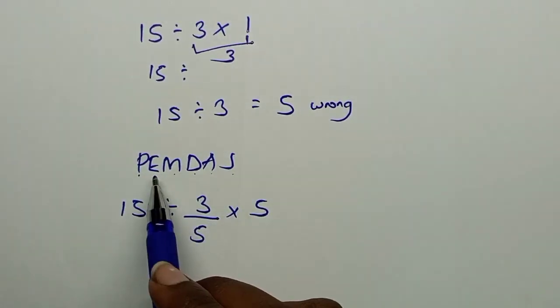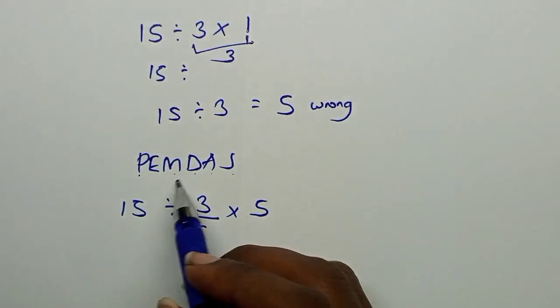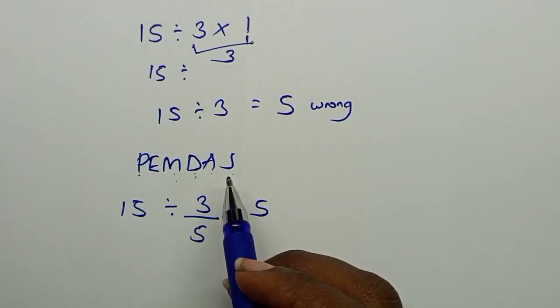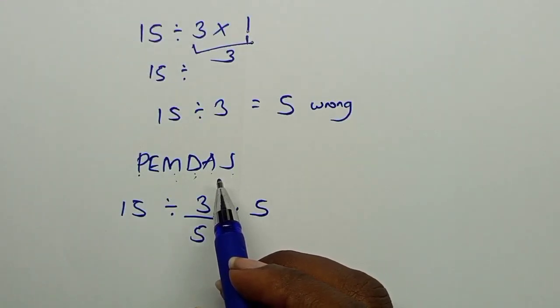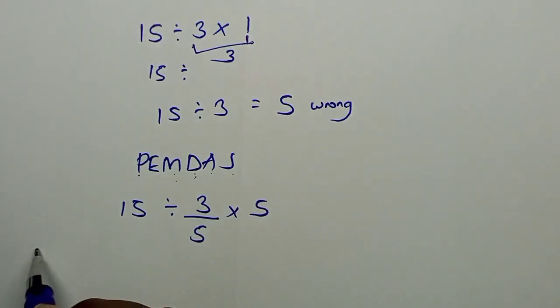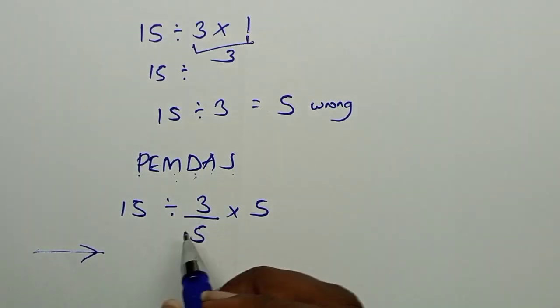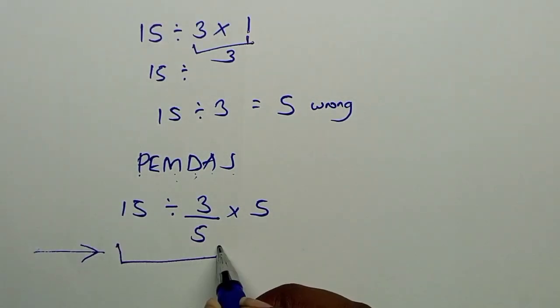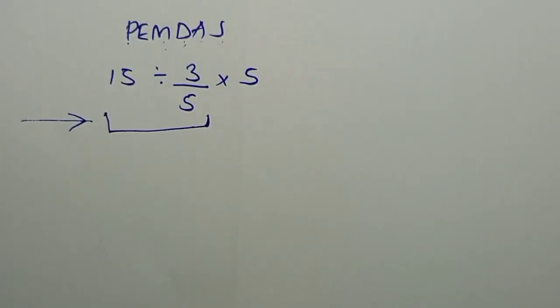We don't have parenthesis, we don't have exponents. Next is multiplication and division. Between multiplication and division, you work out whichever comes first from left to right. From the left, division is appearing first. That means we have to work out this first.